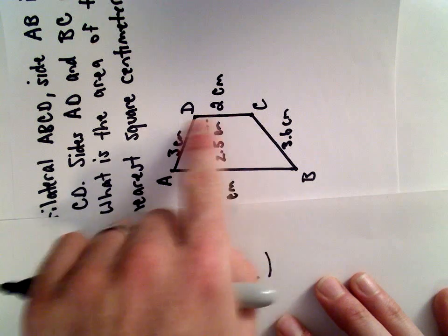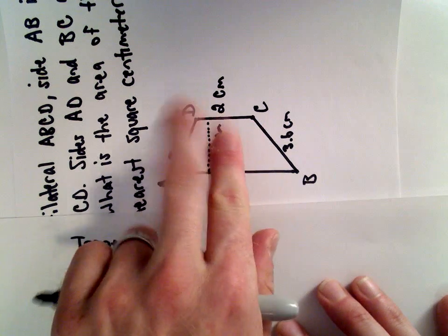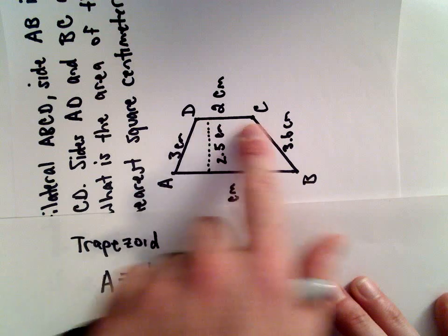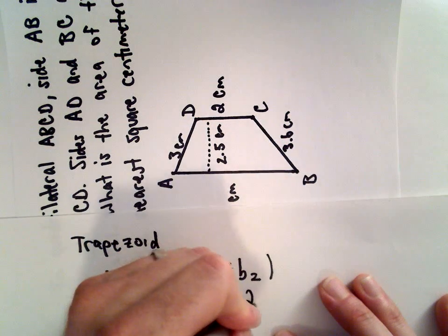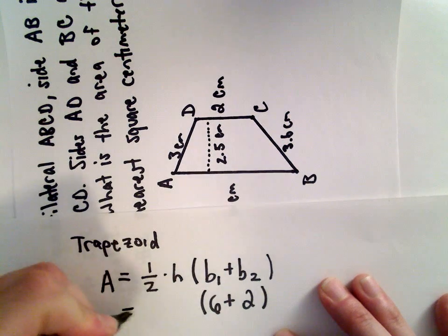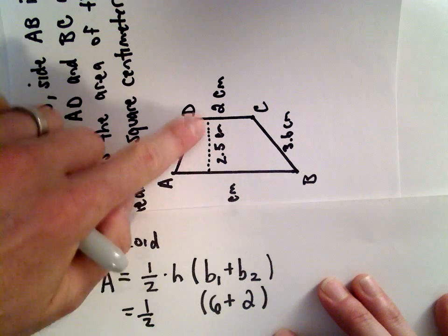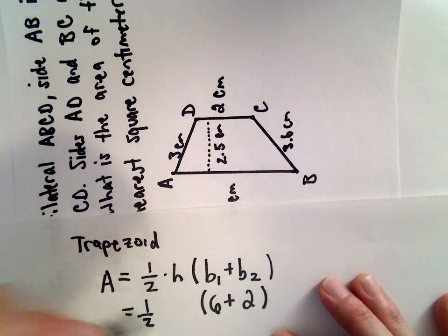The other base, again, that's the other side that is parallel. So that's going to have a length of two. The height, again, that's given to us as 2.5.